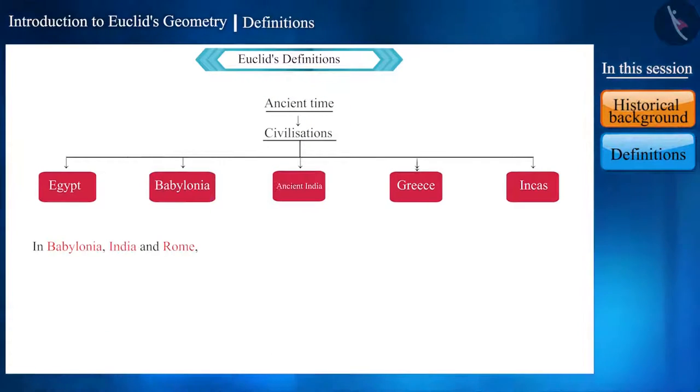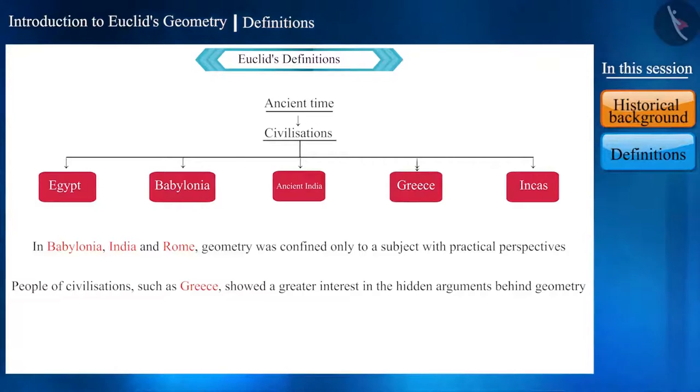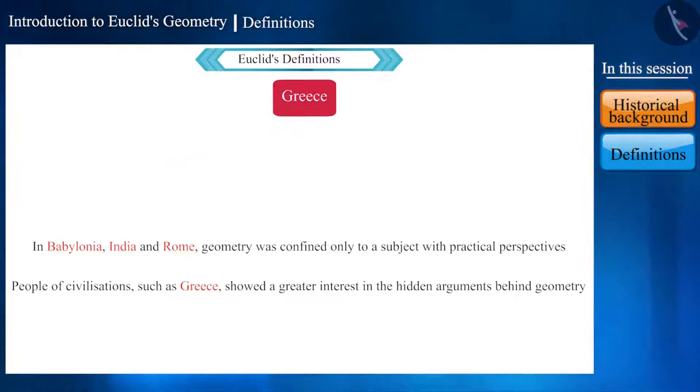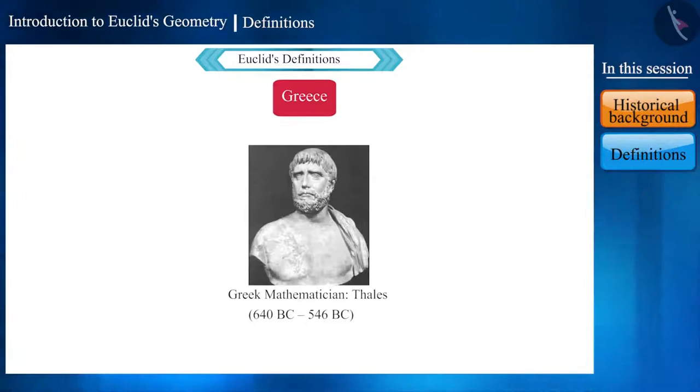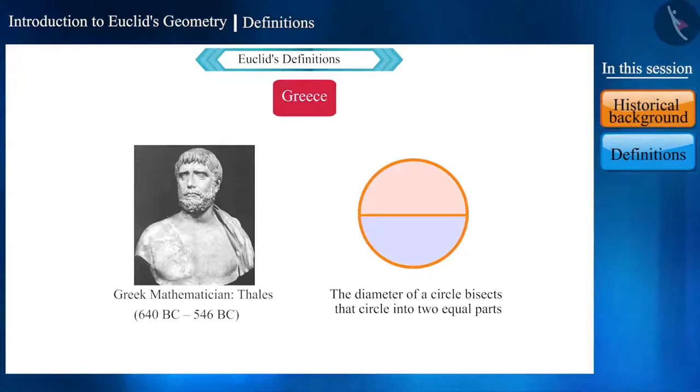In some civilizations, such as Babylonia, India and Rome, geometry was confined only to a subject with practical perspectives. But people of civilizations, such as Greece, showed a great interest in the arguments behind geometry. The Greek mathematician Thales first provided the fact that the diameter of a circle bisects that circle into two equal parts.